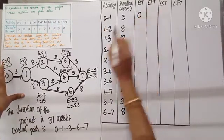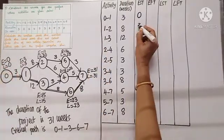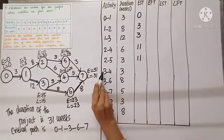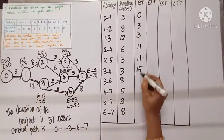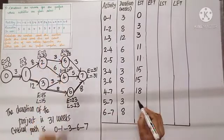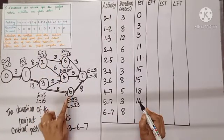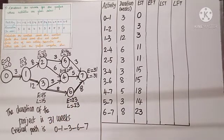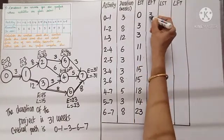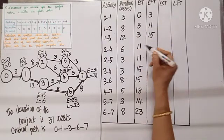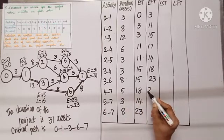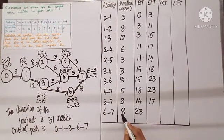EST is the E value at the starting node of each activity: zero-one starts at node zero, EST=0; one-two starts at node one, EST=3; one-three starts at node one, EST=3; two-four starts at node two, EST=11; two-five starts at node two, EST=11; three-four starts at node three, EST=15; three-six starts at node three, EST=15; four-seven starts at node four, EST=18; five-seven starts at node five, EST=14; six-seven starts at node six, EST=23. EFT is EST plus duration: 0+3=3, 3+8=11, 3+12=15, 11+6=17, 11+3=14, 15+3=18, 15+8=23, 18+5=23, 14+3=17, 23+8=31.